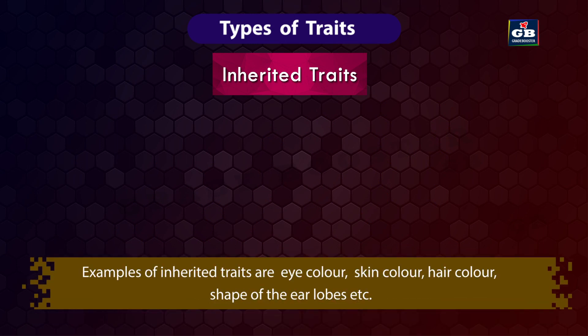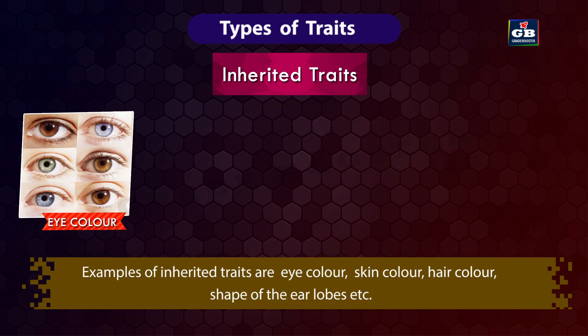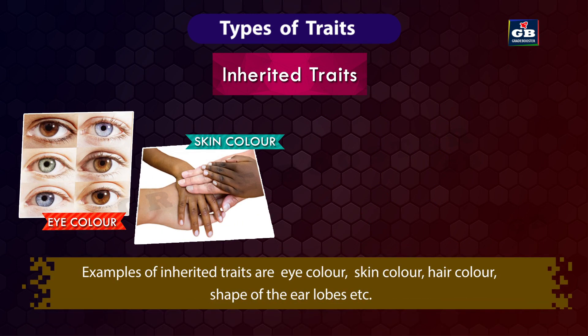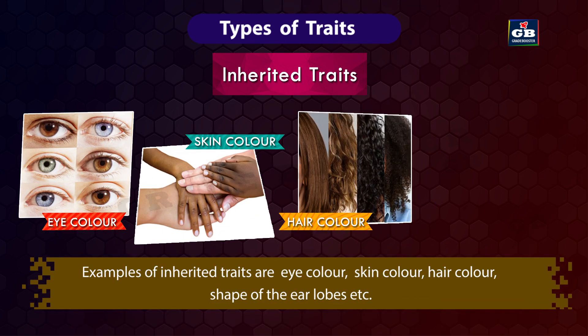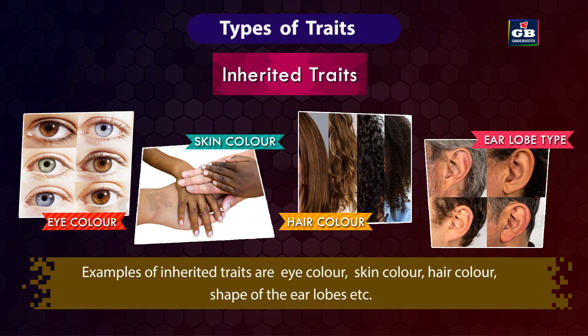Examples of inherited traits include eye color, skin color, hair color, and shape of the earlobe.